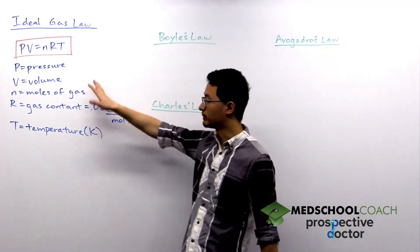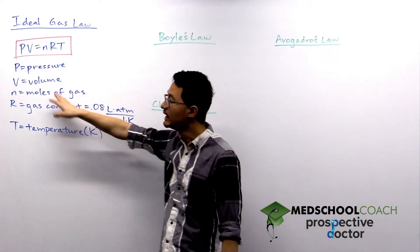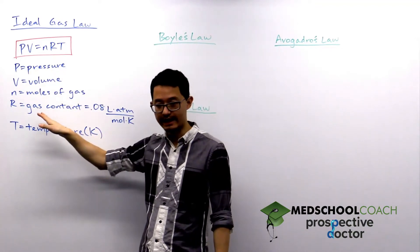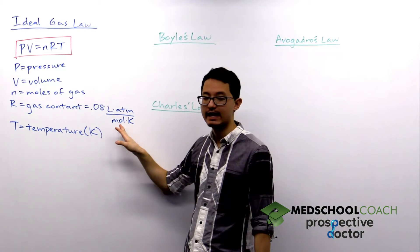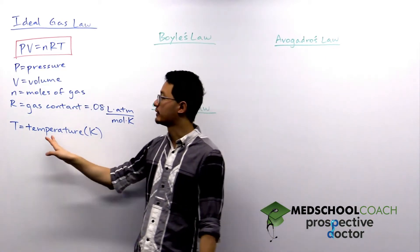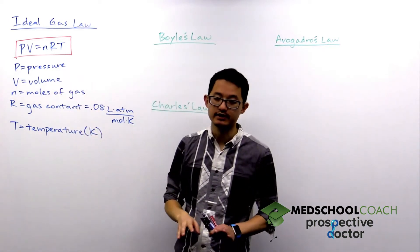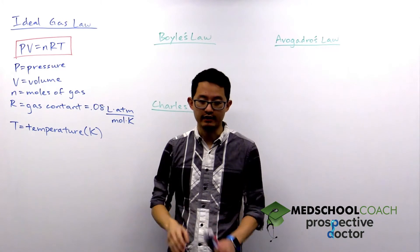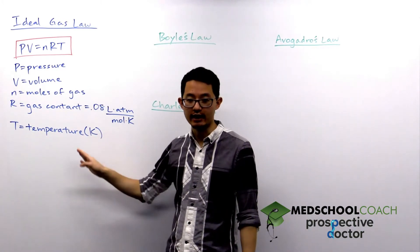We have P, the pressure; V, volume; n, the moles of gas; R, the gas constant, which is equal to 0.08 liters atmospheres per mole Kelvin; and then we have temperature T. Make sure when you're doing calculations with temperature that you're using the Kelvin scale.